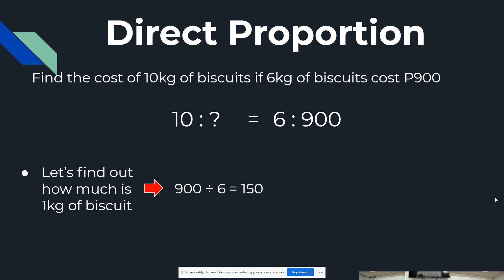Now, what we will do is we will divide 900 pesos by 6 kilograms to find out how much it is, and the answer is 150.